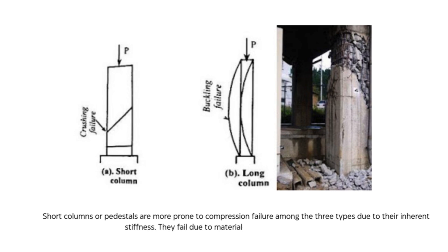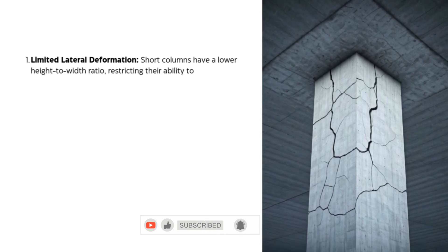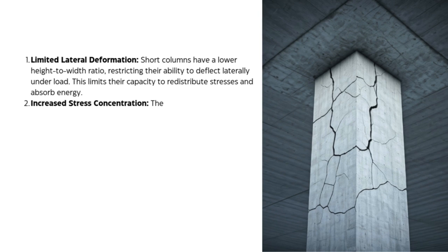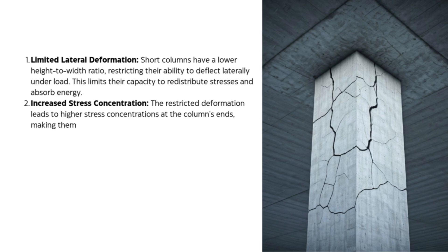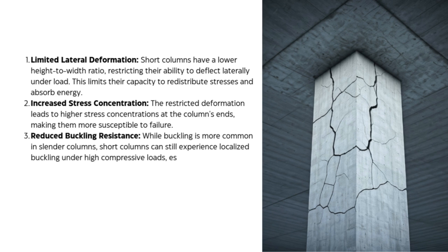Short columns have a lower height-to-width ratio, restricting their ability to deflect laterally under load. This limits their capacity to redistribute stresses and absorb energy. The restricted deformation leads to higher stress concentrations at the column's ends, making them more susceptible to failure. While buckling is more common in slender columns, short columns can still experience localized buckling under high compressive loads, especially if there are imperfections or eccentricities in the load application.